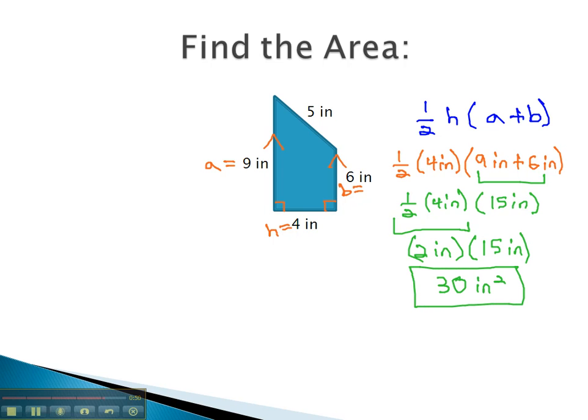Again, being very careful on this example, base does not mean top and bottom. Base means the two parallel sides going the same direction, that's the 9 and the 6. Height does not mean up. Height is the measurement that's connecting the two bases at a right angle. In this case, it's the horizontal one at the bottom, that's 4 inches.